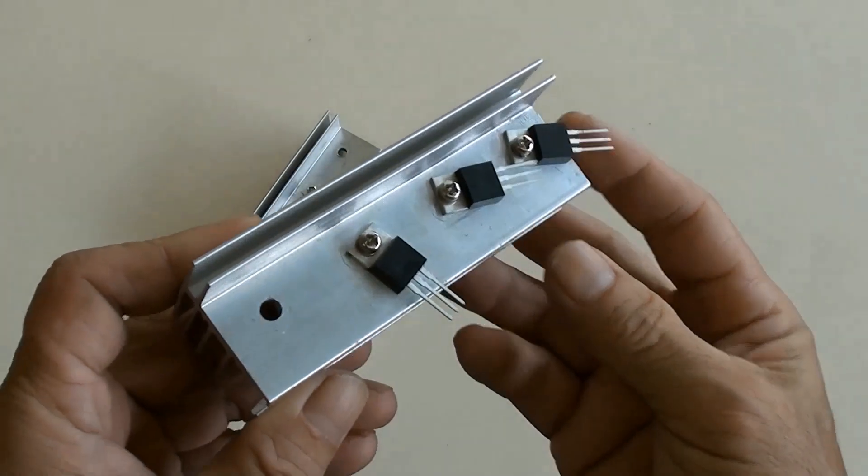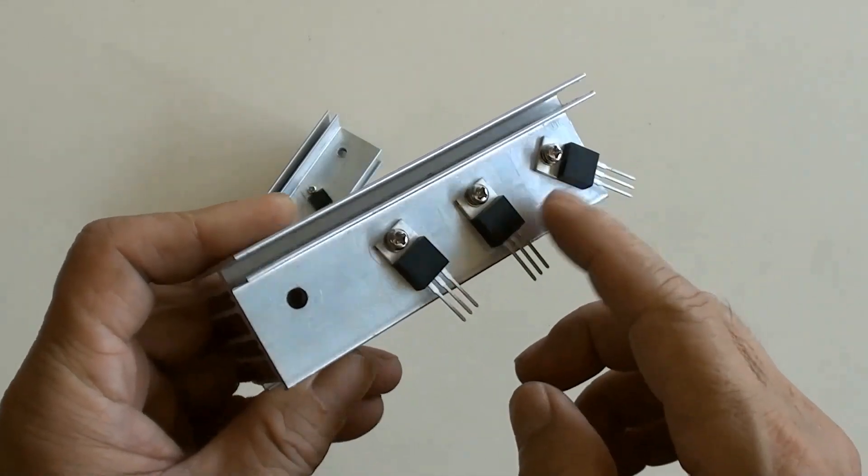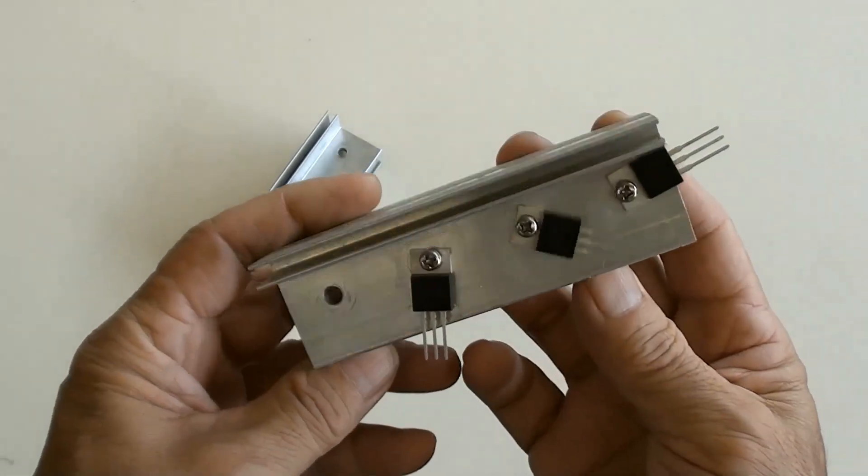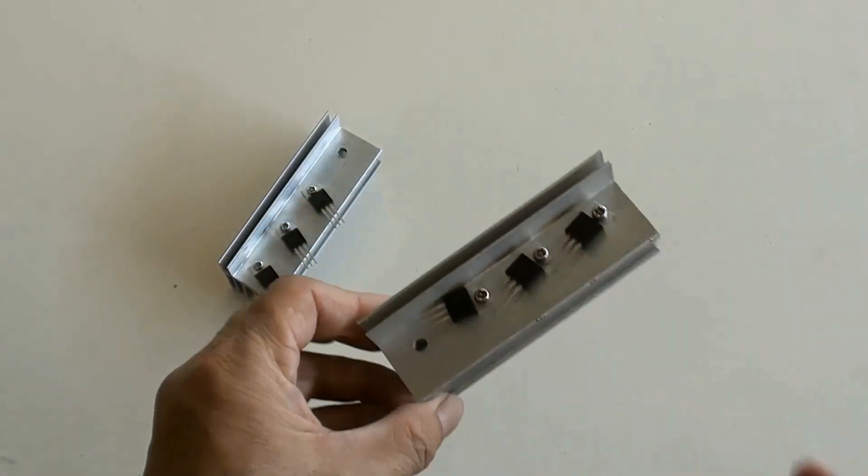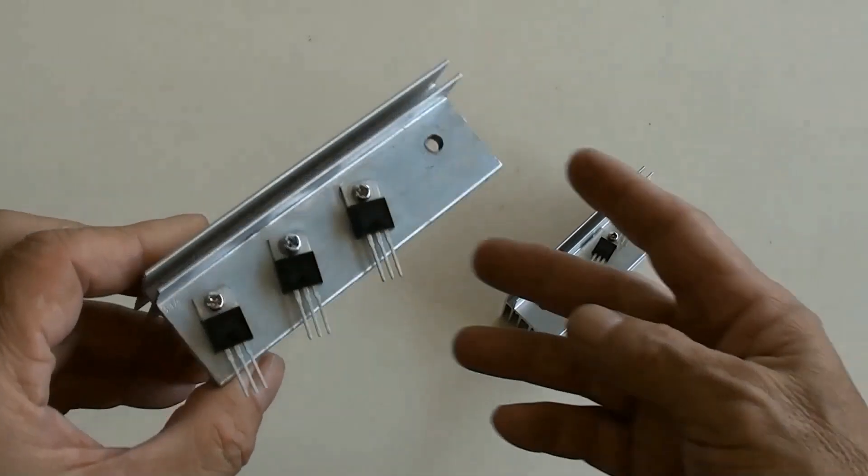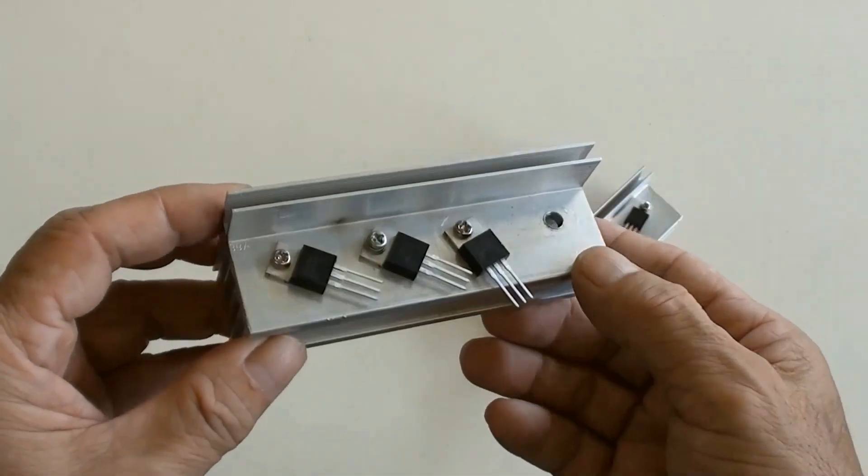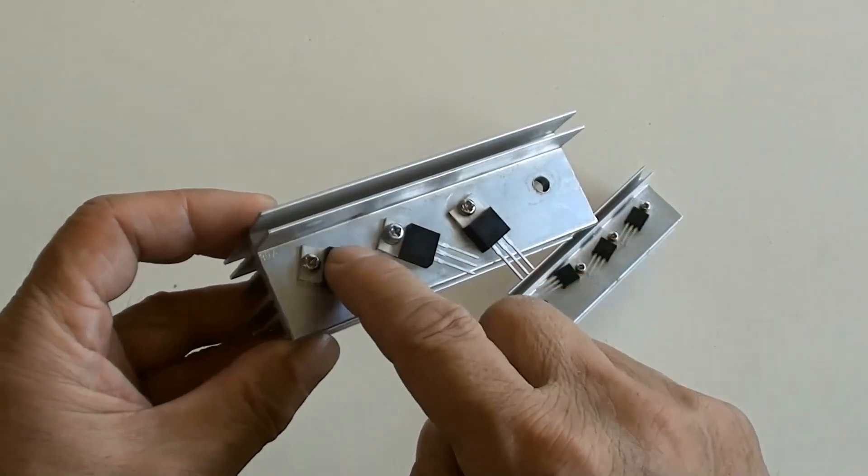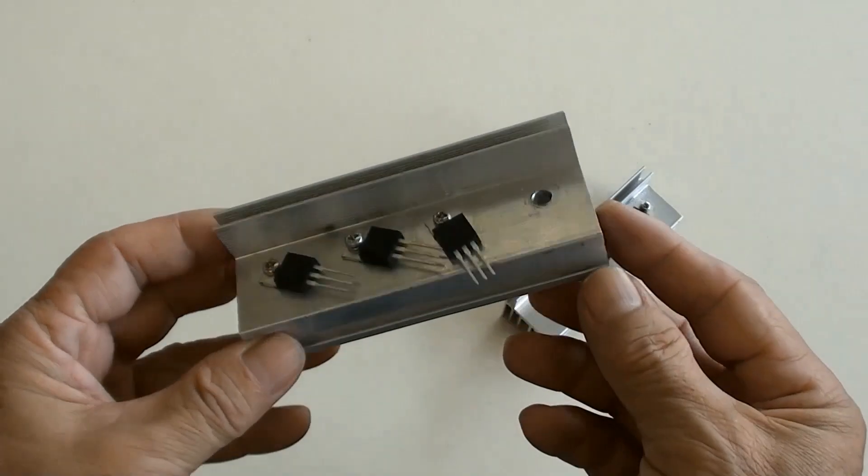These are 3 mosfets of IIF-3205, which will be tightened on this heatsink without the insulation pads. There is another 3 mosfets of IIF-3205 with a heatsink attached. These 2 sets are the same.